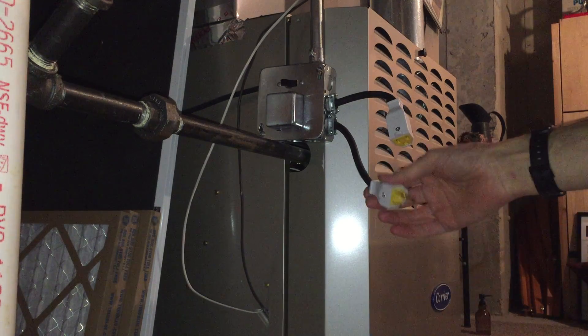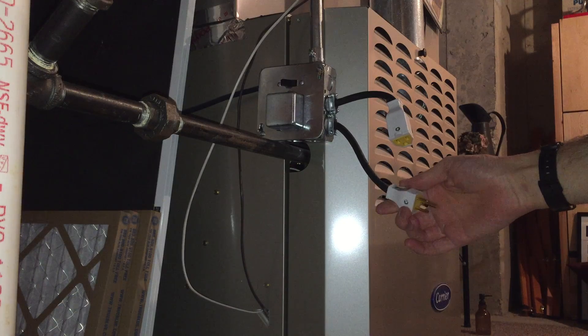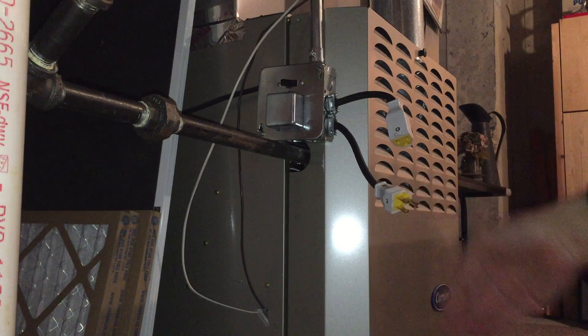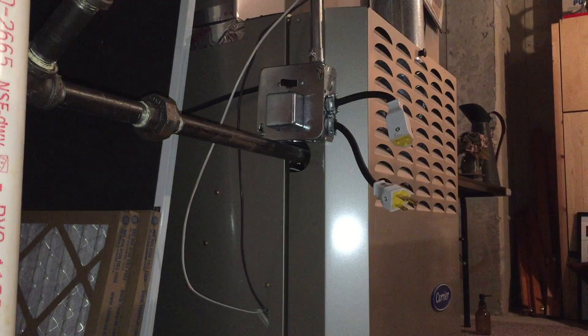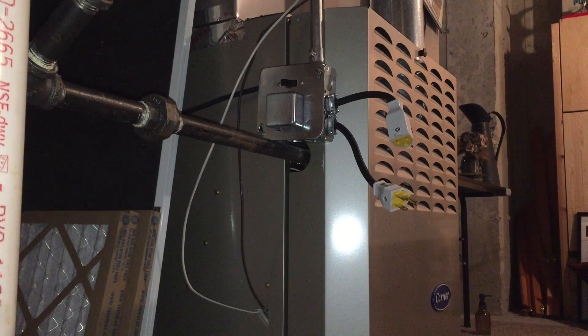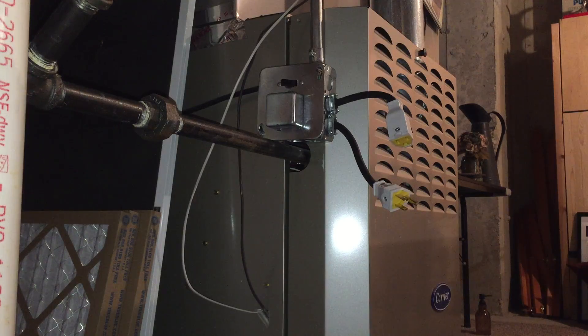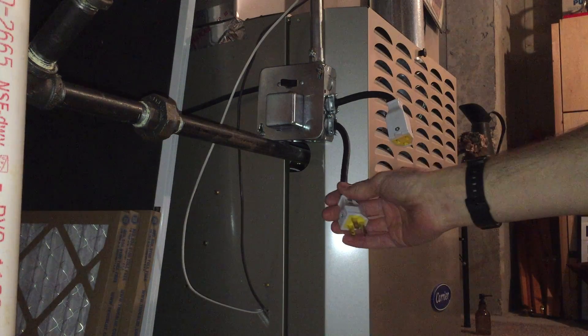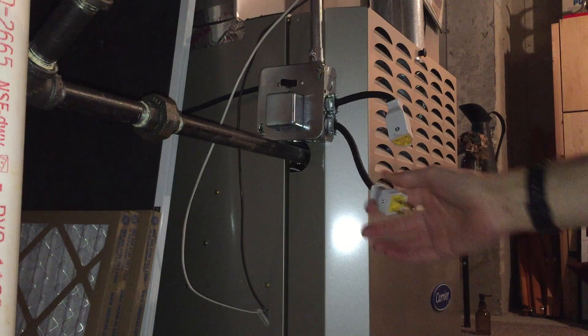And so I would simply take my generator, connect it to an extension cord, a heavy gauge, and then connect the cord to this, and voila! I can confirm that I'm not going to backfeed the house or outside of the house because I have a complete disconnect here. This is only connected to the furnace and to the humidifier.